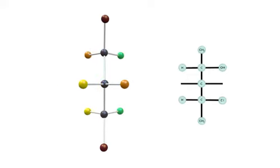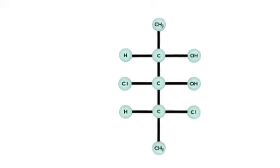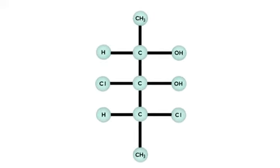In Fischer projection, the atoms or bonds which are in the horizontal line should come out of the plane, while those in the vertical line should be going inside the plane.